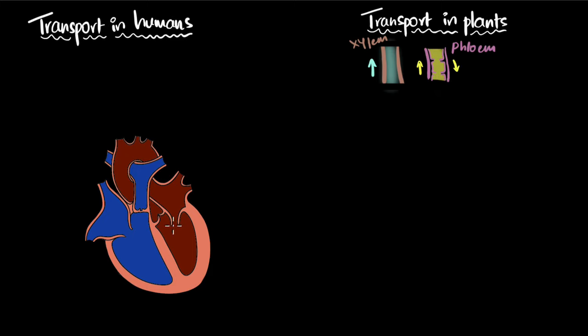Let's first look at the transportation in humans. Let's look at how the blood is pumped in the heart. Let's get some basics right. The top chambers of the heart is called the atrium. This is the atrium, this is the atrium, and the bottom chambers are called the ventricles. This is the ventricle, this is the ventricle.